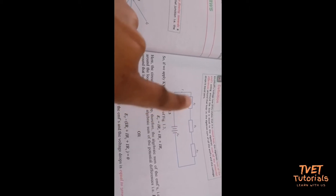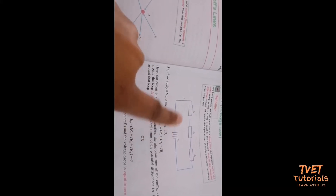For Kirchhoff's second law, it states that in a closed circuit, the total EMF is equal to the sum of the potential differences around the loop — meaning the total EMF equals the voltage across R1 plus the voltage across R2 plus the voltage across R3.